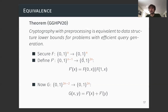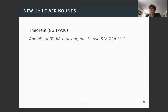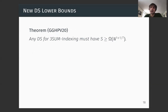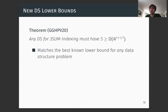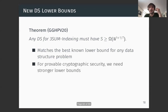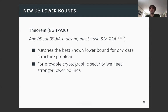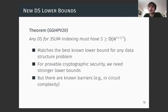We also prove that 3SUM is actually somewhat hard: any static data structure solving 3SUM with query time t must use space at least n to the (1 + 1/t). This gives interesting results as long as t is sub-logarithmic, and it matches the best known lower bound for any data structure problem. For provable cryptography we would like even stronger lower bounds, but there are known barriers — in circuit complexity, for instance — making it hard to prove bounds stronger than the ones we currently know.